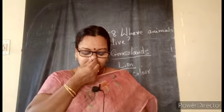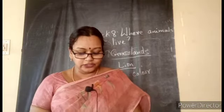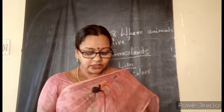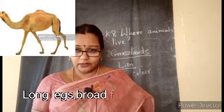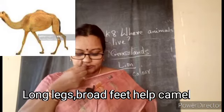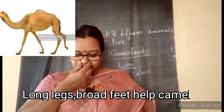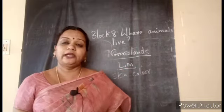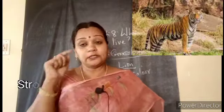In the table given, the features of deserts, high mountains, and grasslands are clearly described. By reading the textbook you can complete which physical feature is helping each animal to survive there. What are the physical features that help a camel? Long legs, broad feet, and thick skin. A tiger lives in grassland and forest — the skin color and stripes on its body help it merge with the surroundings to hunt food.